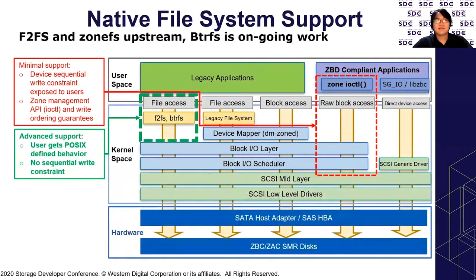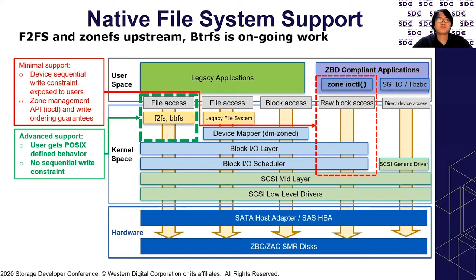Next, how to access ZBD from Linux? There are several ways to access it. For example, the raw block access method provides minimal support. You can issue zone management commands like reporting zone status or zone resetting through zone IO control. Application write order is preserved through the kernel to disk. However, ZBD's sequential write constraint is exposed as-is to users, so users must be aware of the zone constraint. The application must be ZBD compliant, and that means legacy applications won't work with this interface.